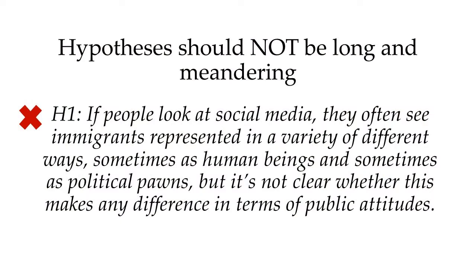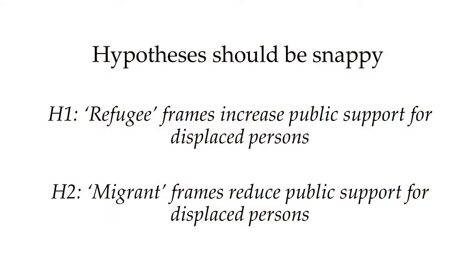Other hypotheses might be too long and meandering to make much sense. For instance, this one's a bit of a mouthful: 'If people look at social media, they often see immigrants represented in a variety of different ways, sometimes as human beings and sometimes as political pawns, but it's not clear whether this makes any difference in terms of public attitudes.' Better to go with something snappier: 'Social media posts framing displaced persons as refugees are shared more often than those using the term migrants,' or 'refugee frames increase public support for displaced persons,' or 'migrant frames reduce public support for displaced persons.'